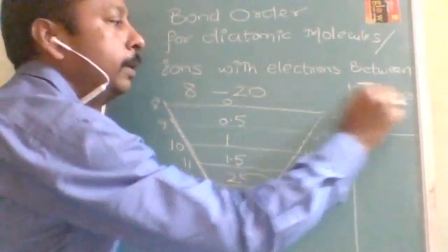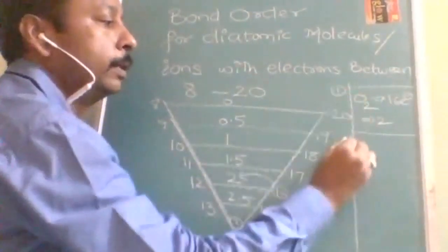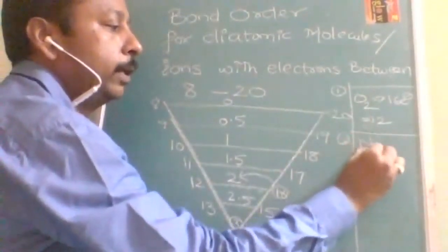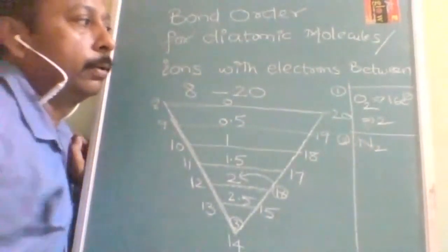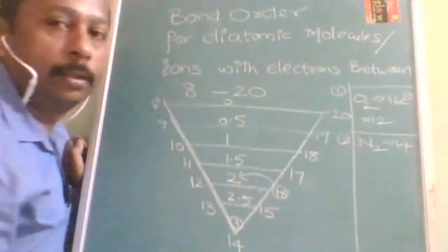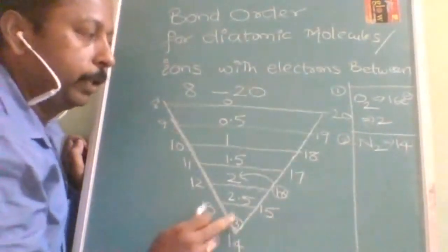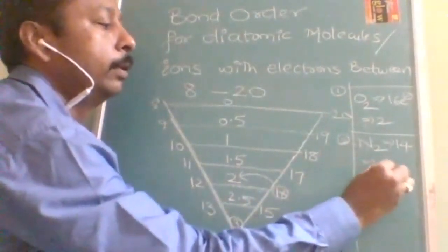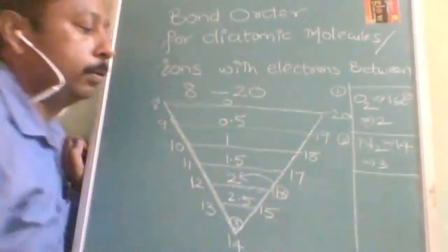OK, now let us see another example. OK, first example, is it understood? Now let us see whether it will work for nitrogen or not. OK, nitrogen, each nitrogen 7 electrons. Therefore 14 electrons. So 14 electrons means bond order will be 3. Is it understood students?